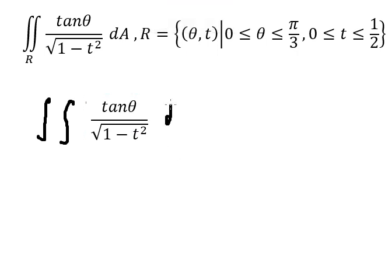About d theta, so we put from 0 to pi over 3. About t, that is from 0 to 1 over 2.